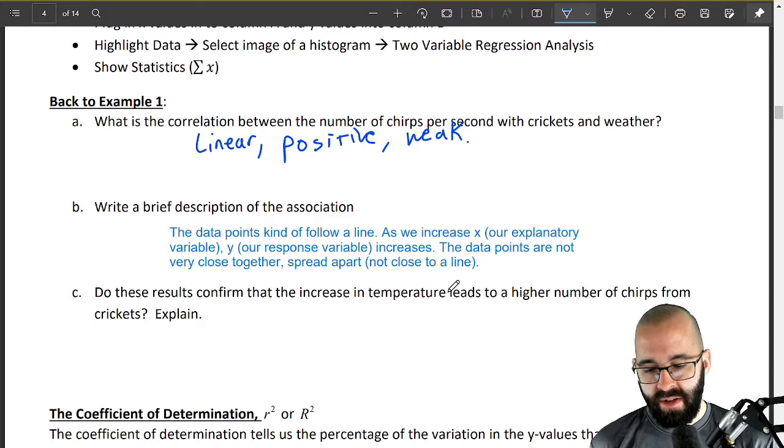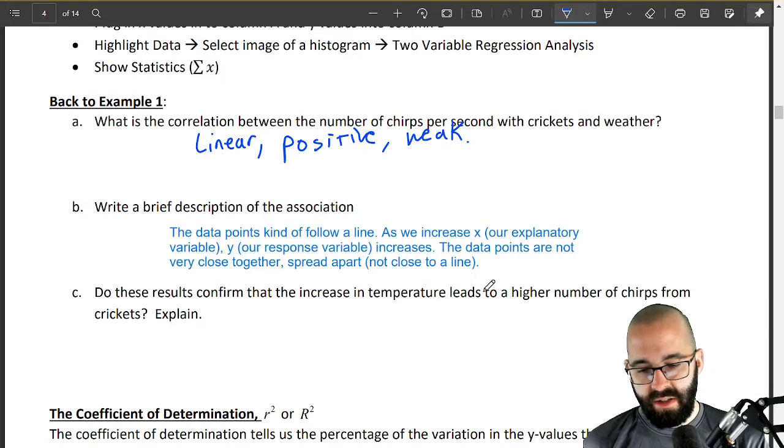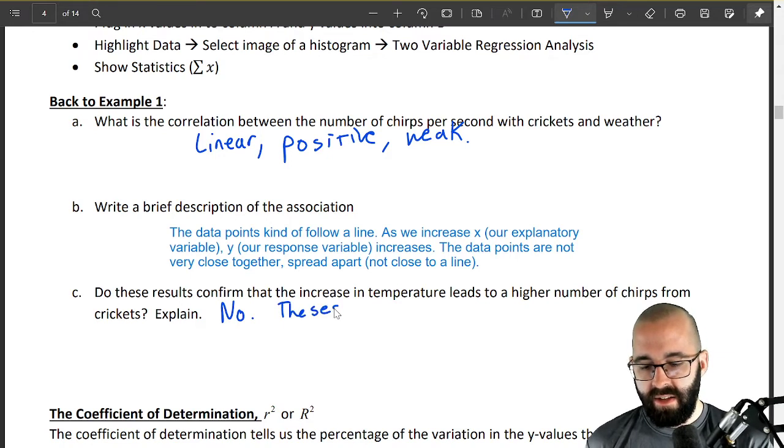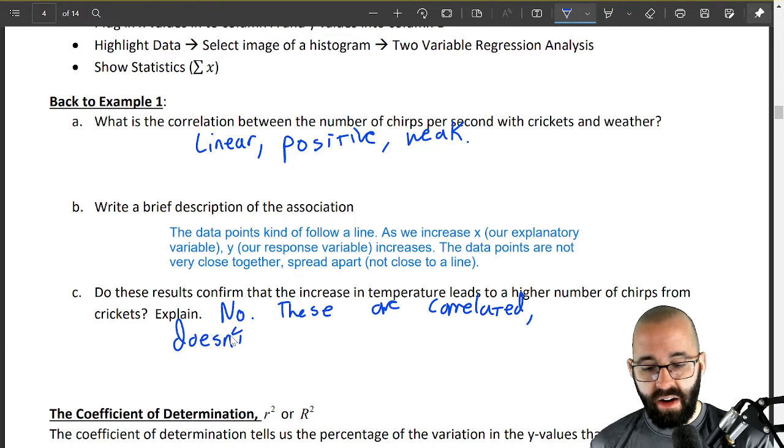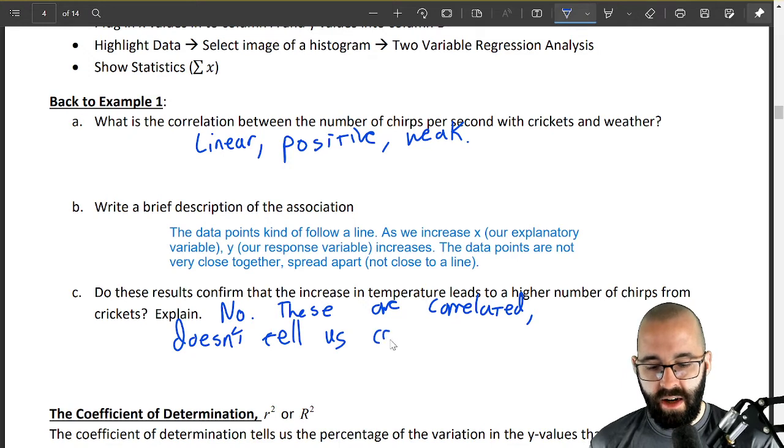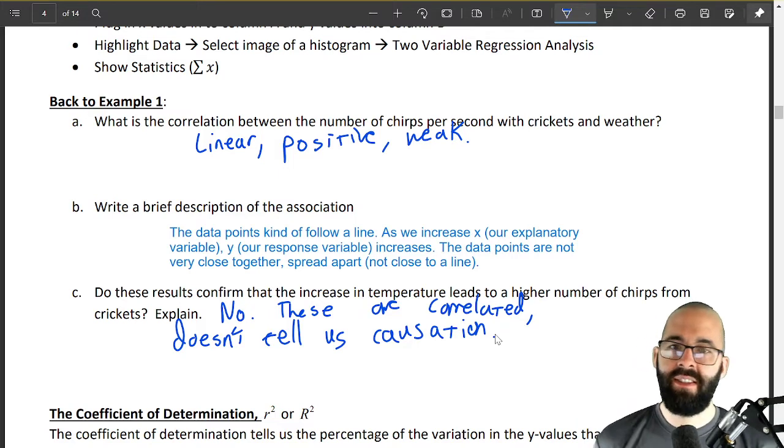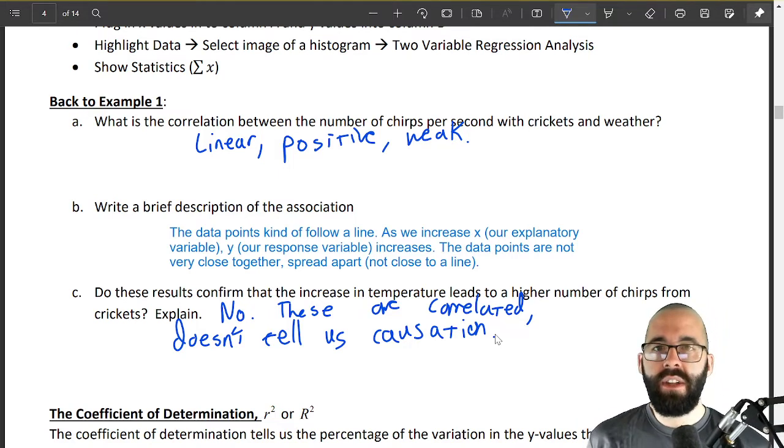So do these results confirm that an increase in temperature leads to a higher number of chirps? And again just like in the first one they know these are correlated, but it doesn't tell us causation. Maybe they are, and I'm no biologist but from my five minute research it looked like yeah maybe maybe it is caused but our scatter plot doesn't tell us that. So let's incorporate r, we're supposed to be talking about using Geogebra to find r.